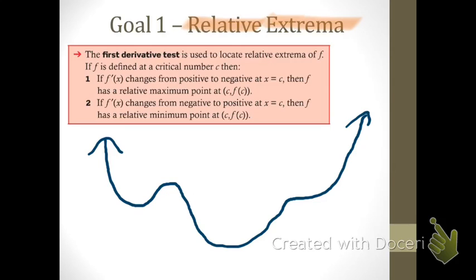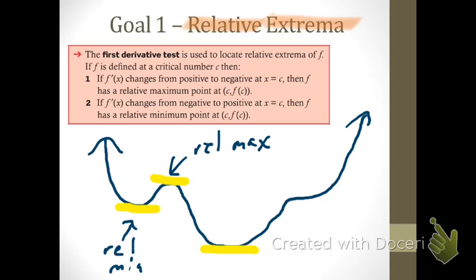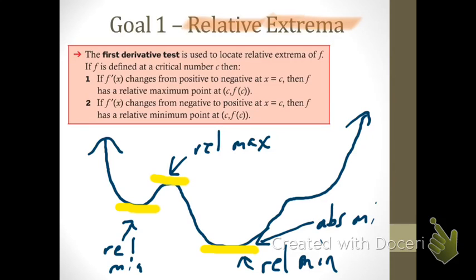Relative extrema in particular are the extreme y-values compared to all the other ones around them. On this graph you'll see several places you'd consider minimum and maximum values — all the places where the first derivative is equal to zero. There's a minimum value, a maximum value, and another minimum value, giving us two minimums and a maximum. Each one of those would be a relative min or a relative max value. Having two minimums means they can't both be the minimum value on the graph.